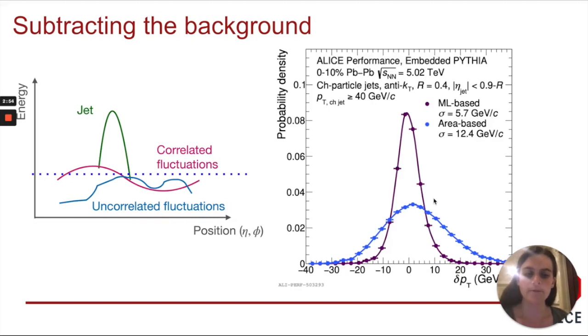When we look at the performance of this machine learning-based background subtraction, we look at the delta pT distributions, which are essentially a measure of the resolution of the jet pT. When we compare the machine learning-based curve in purple to the area-based curve shown here in blue, we see that the machine learning-based curve shows a significantly reduced width indicating a significantly improved resolution on the jet pT.